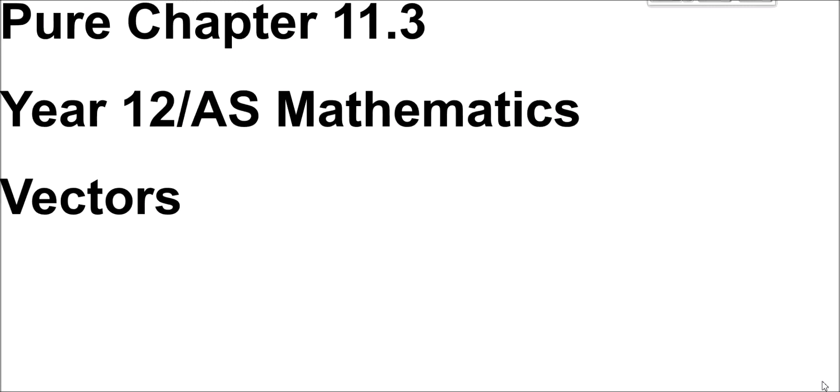Hello and welcome again, one and all, to the third lesson on vectors. Today we're going to look at how vectors can be represented in different forms, namely the i and j form and column vector form, which we've done before. But this time we're also going to see how we can work out the vector forms by applying simple Pythagoras and trigonometry to vector questions.